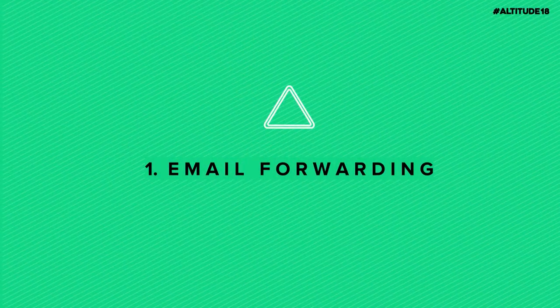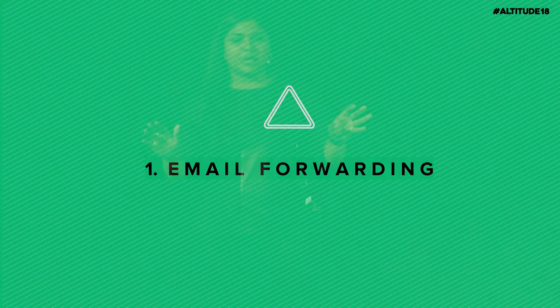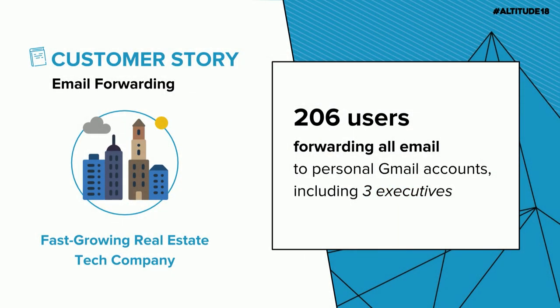Let's go through the five common risk areas. First, and we see this on almost every single implementation, is email forwarding. We see this in two big forms: first, end users forwarding their entire email inbox to personal accounts — be it malicious or not, it's certainly against many internal company policies. The second version takes it a step further, where end users forward specific parts of their inboxes through filters.